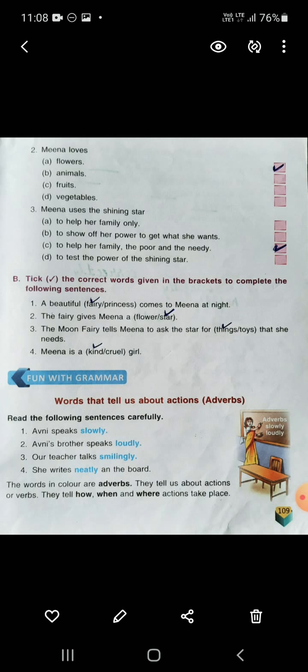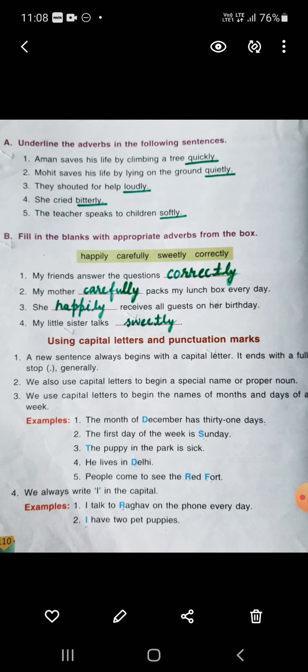Now we will do adverbs. Adverbs are words that tell us about actions — the actions we do. In these sentences, you can see some blue color words. They tell us about actions or verbs — how, when, and where the actions take place. You have to underline those words.